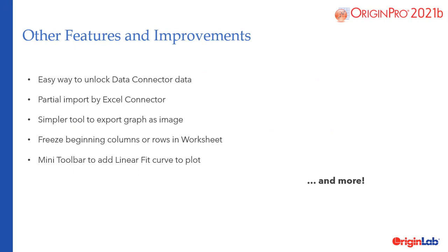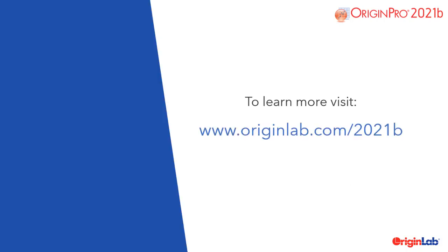Other key features and improvements include an easy way to unlock data connector data, partial import by Excel connector, a simpler tool to export graphs as images, the ability to freeze beginning columns or rows in worksheets, a mini toolbar button to add linear fit curves to a plot, and much more. To learn more, visit our website at www.originlab.com/2021b.